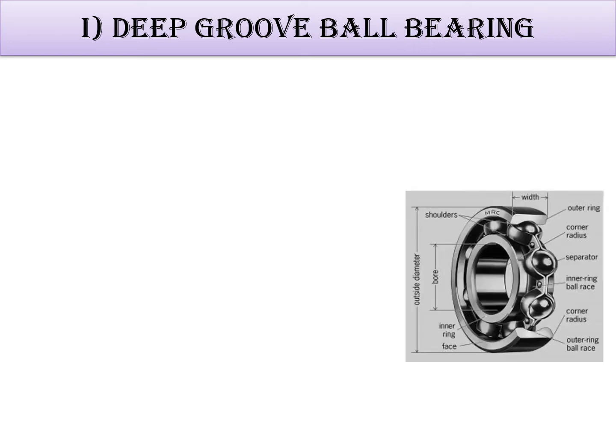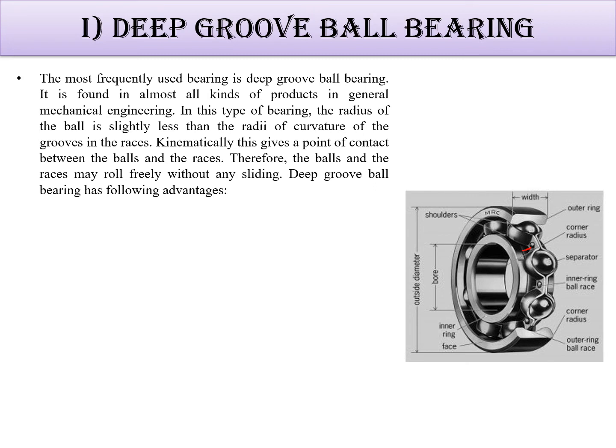This is the deep groove ball bearing. You can see the nomenclature: the shoulders or cage, the inner ring, the outer ring, and the ball. The groove radius is slightly greater than the ball radius — 5 to 10 percent — which we also saw in the previous slide. This curve is slightly greater than the ball radius.